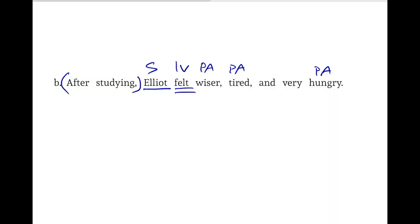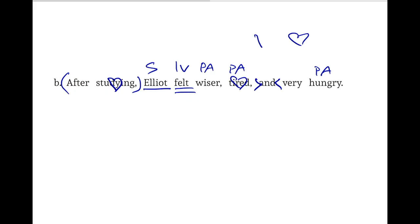As we continue to look at this sentence, we'll note that we have the word 'and,' which we'll set apart with angle brackets. We also notice that we have some other verbal elements in this sentence. 'Studying' is a verbal, and so is 'tired,' because it involves a kind of action — in this case, growing weary. We use a heart symbol because a verb is the heart of a verbal. Also, when you draw a heart, you use a V, reminding you of the verbal element.